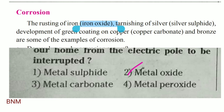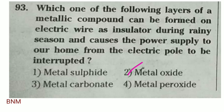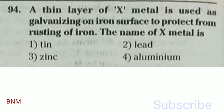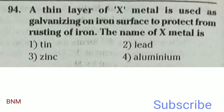For example, iron reacts with water and oxygen to form iron oxide. The metal oxide formed is used in galvanizing — coating the iron surface with a thin layer of zinc metal to protect it from rusting.